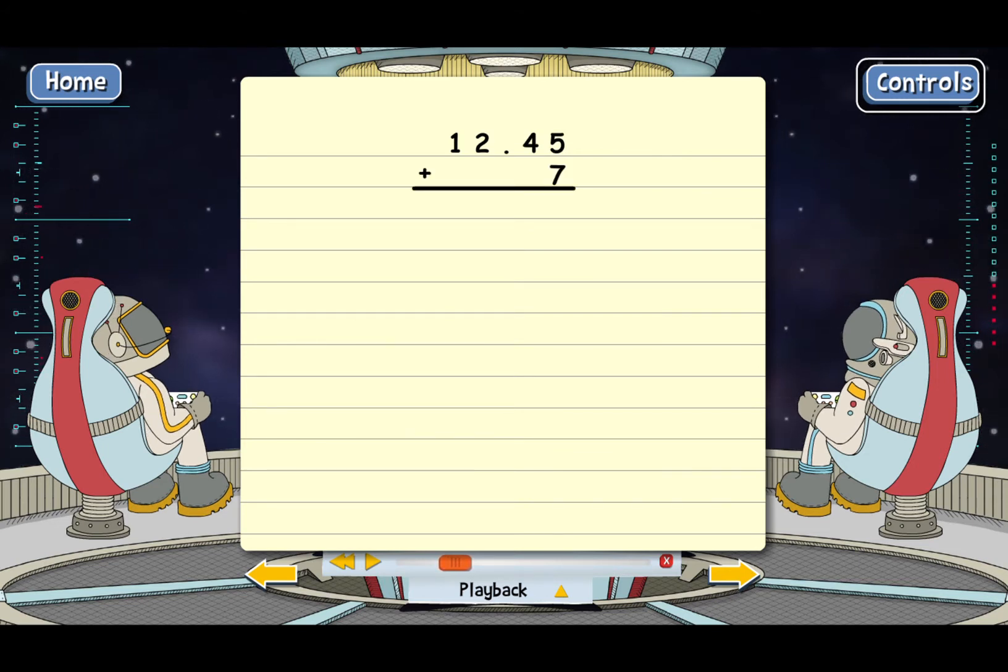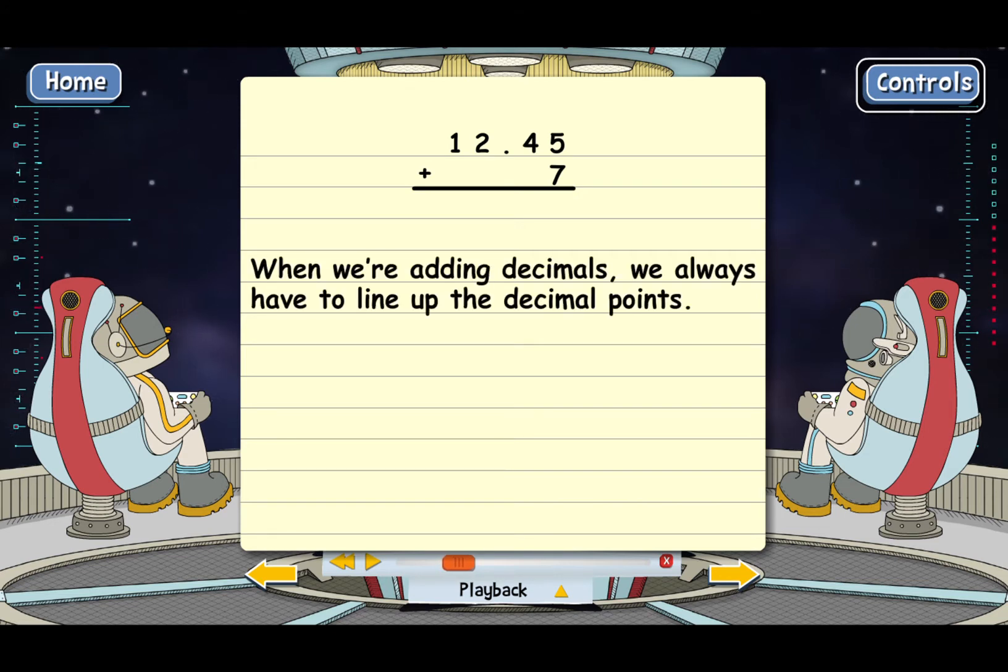When we're adding decimals, we always have to line up the decimal points, remember? But we've got a problem here because 7 doesn't have a decimal point. What do we do now?